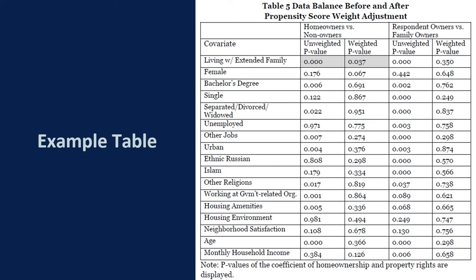This is the table in my paper to report data balance before and after the weight adjustment. Note that what you are seeing are p-values instead of coefficients. Before the adjustment, there are many variables co-varying with home ownership such as education, marital status, whether the respondents living in urban or rural areas, whether he or she is working at government-related organizations.